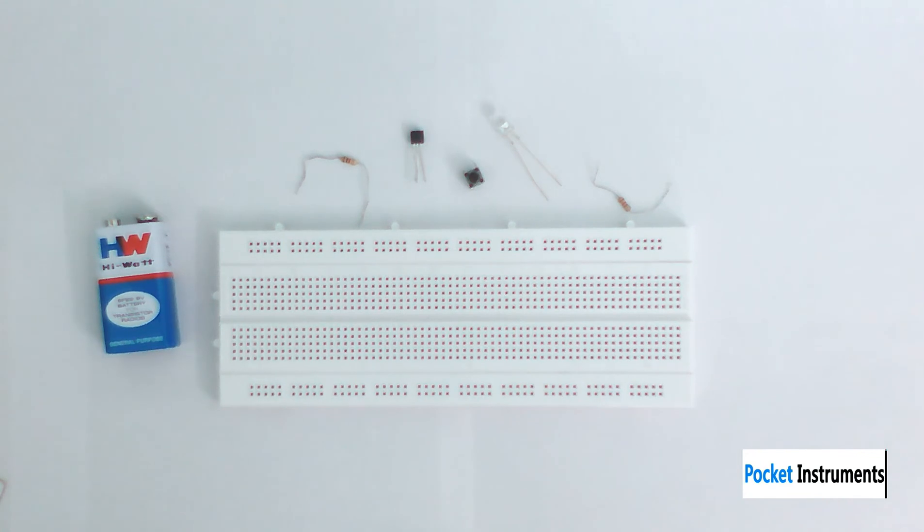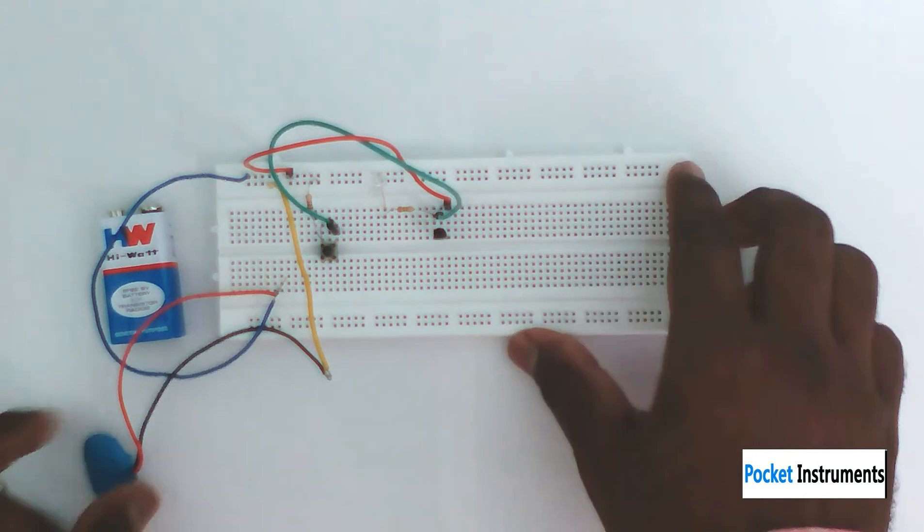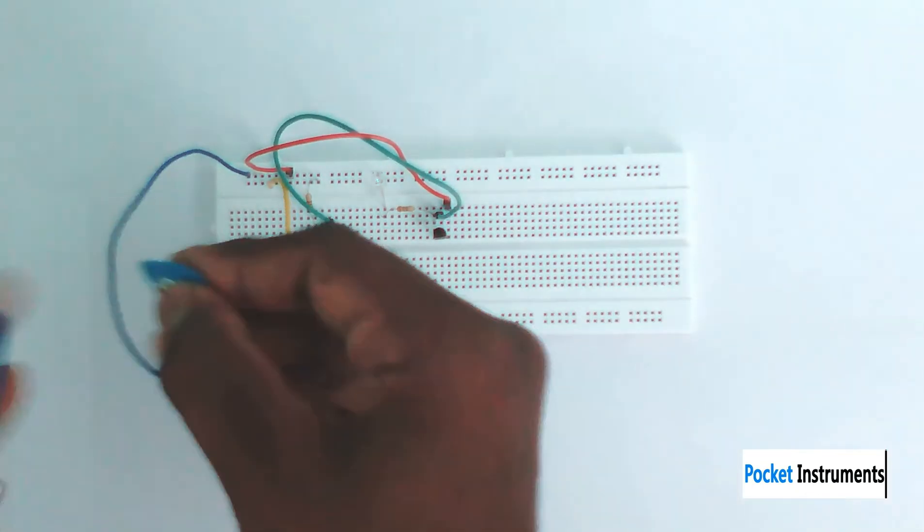So you can connect to the PNP Transistor. Make the connection with the circuit diagram. Now you can connect the battery step terminal.